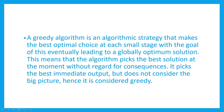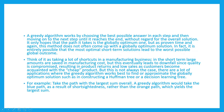A greedy algorithm picks the best solution at the moment without regard for consequences — it picks the best immediate output but does not consider the big picture. Greedy works by choosing the best possible answer at each step, then moving on to the next step until it reaches the end, without regard for the overall solution. It only hopes the path it takes is the globally optimum one, but this method does not often come up with a globally optimum solution.